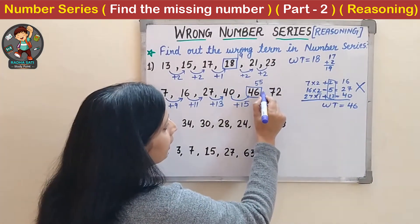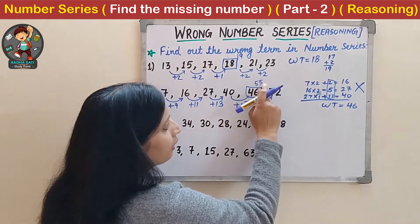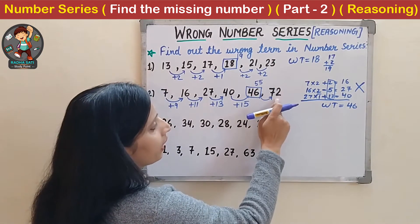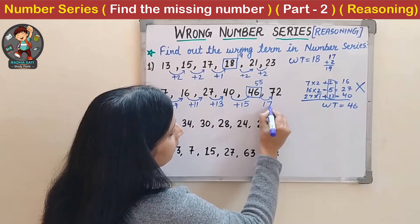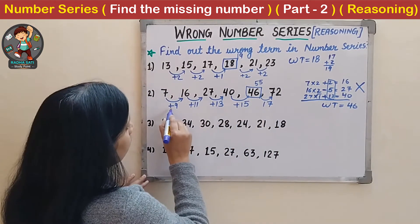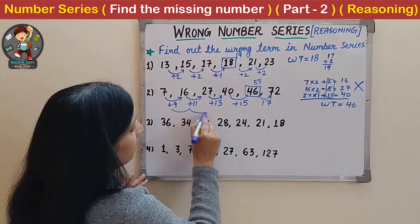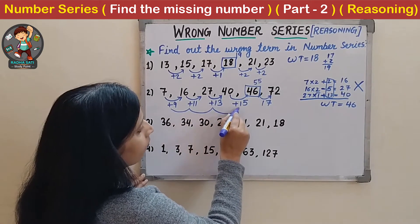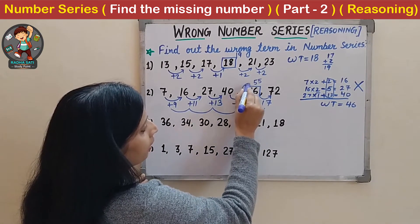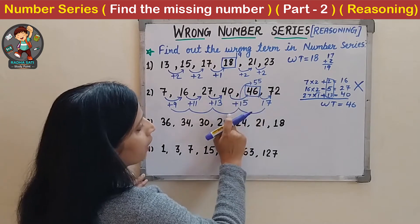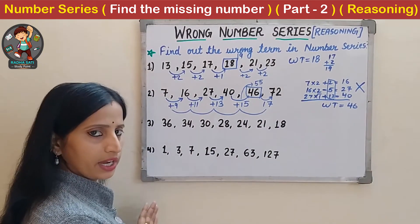Let us check the next step: which number do we add to 55 to get 72? We add 17. So the pattern is 9, 11, 13, 15, and 17 - all consecutive odd numbers.